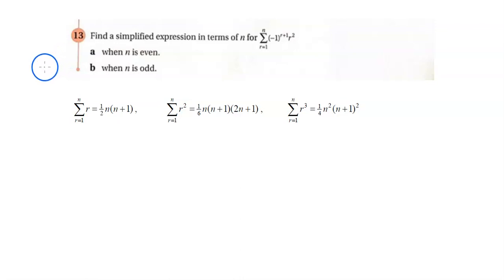Exercise 3.1b, question 13. Find a simplified expression in terms of n for the sum from r equals 1 to n of negative 1 to the power of r plus 1 times r squared. For part a, we're looking at the case where n is even.